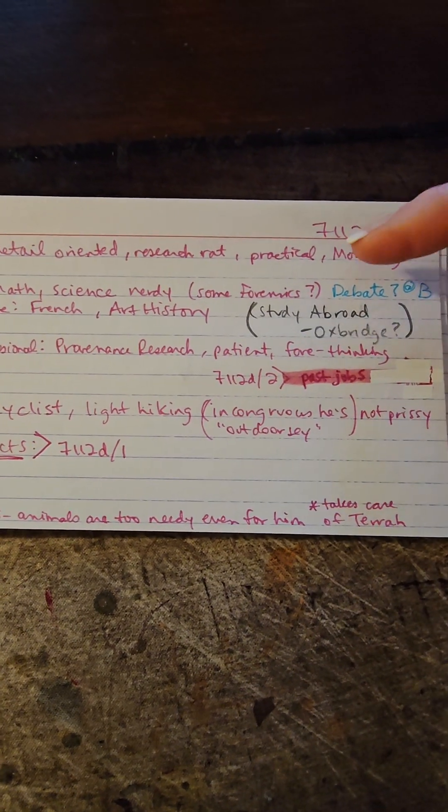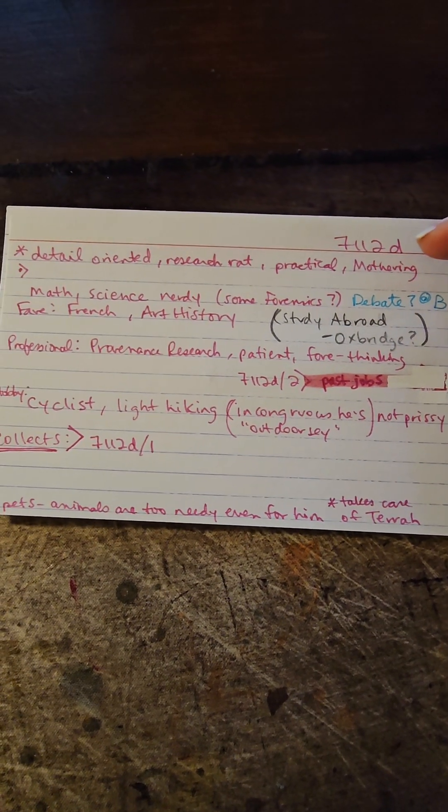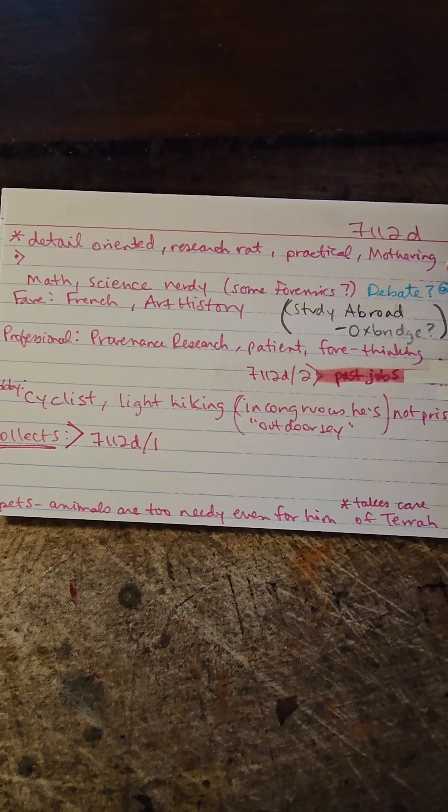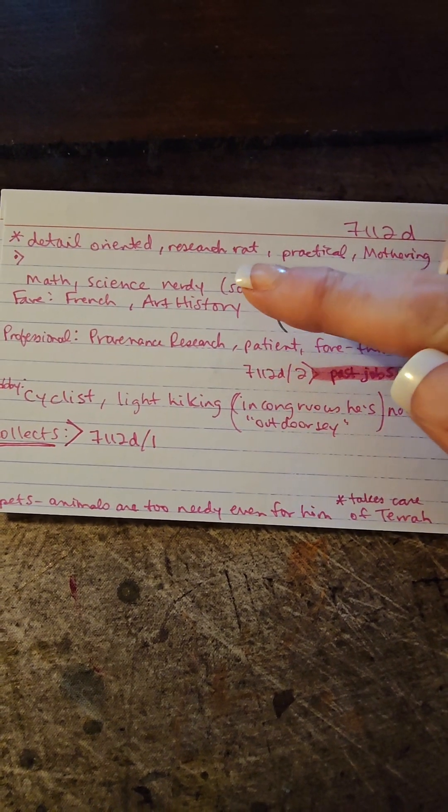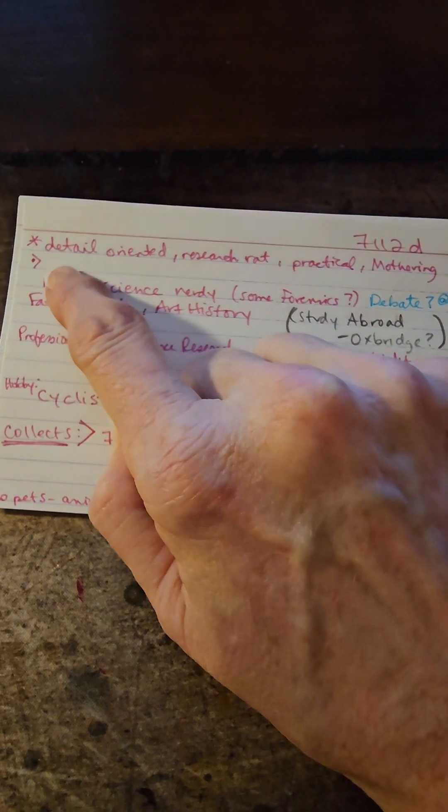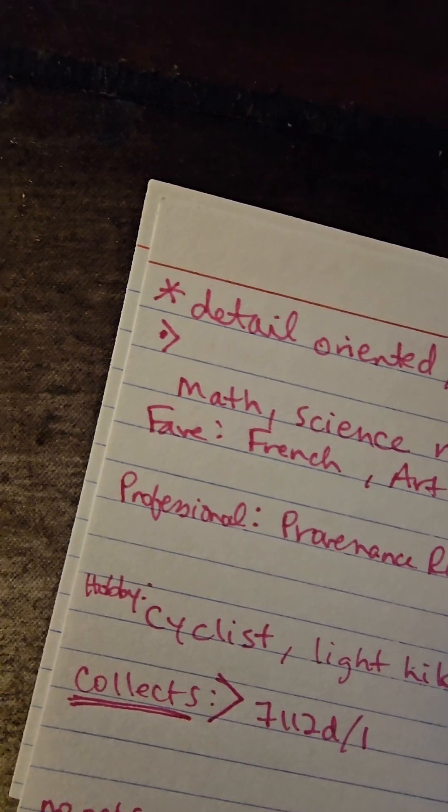I've already numbered my card 7-1-1-2-D, so it's oriented in my Zettelkasten, and I'm going to answer my questions about Chad. So he's detail-oriented, he's a research rat, he's practical and mothering. I've made a little dot with a caret next to it that tells me I'm going to want to go back and do some more noodling on this idea.